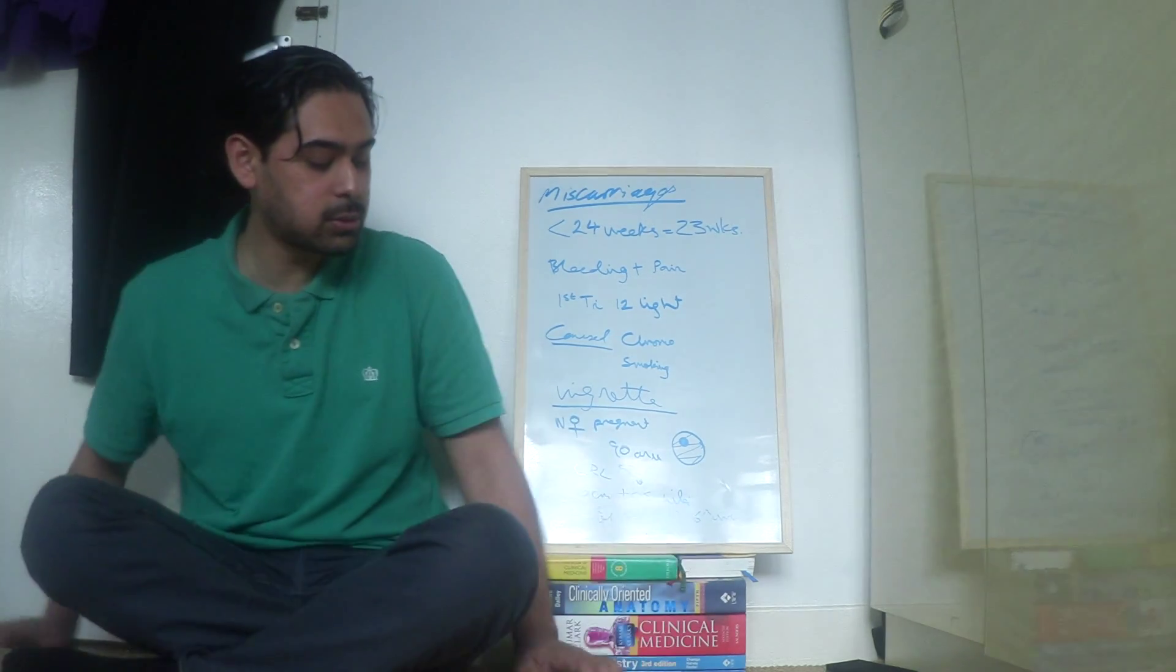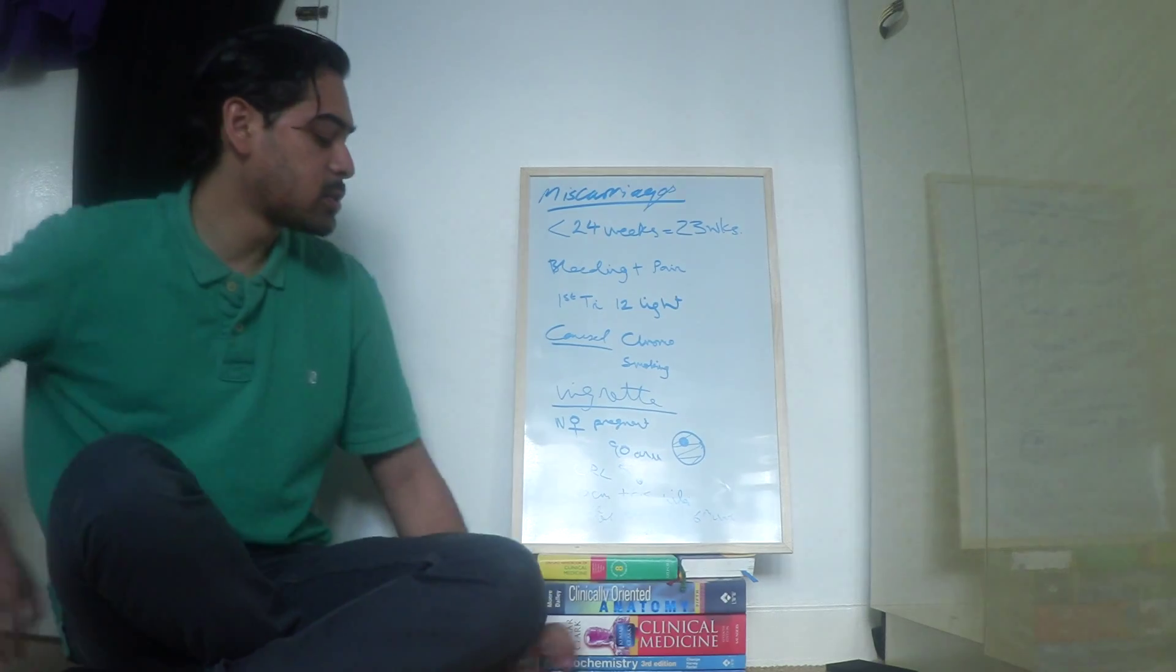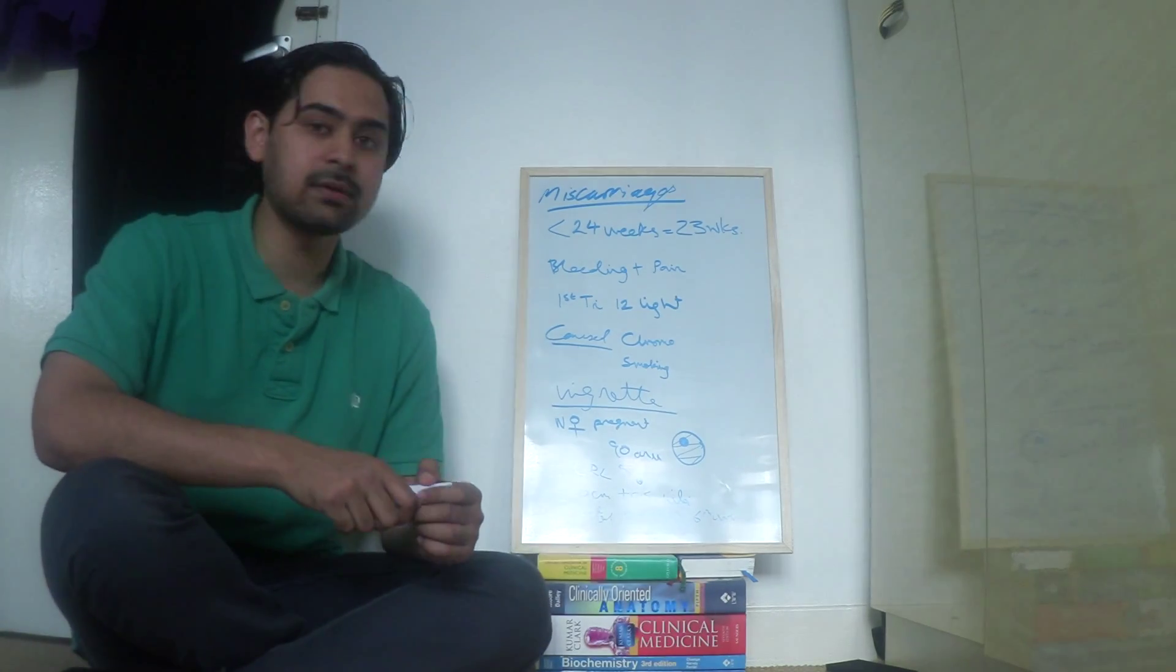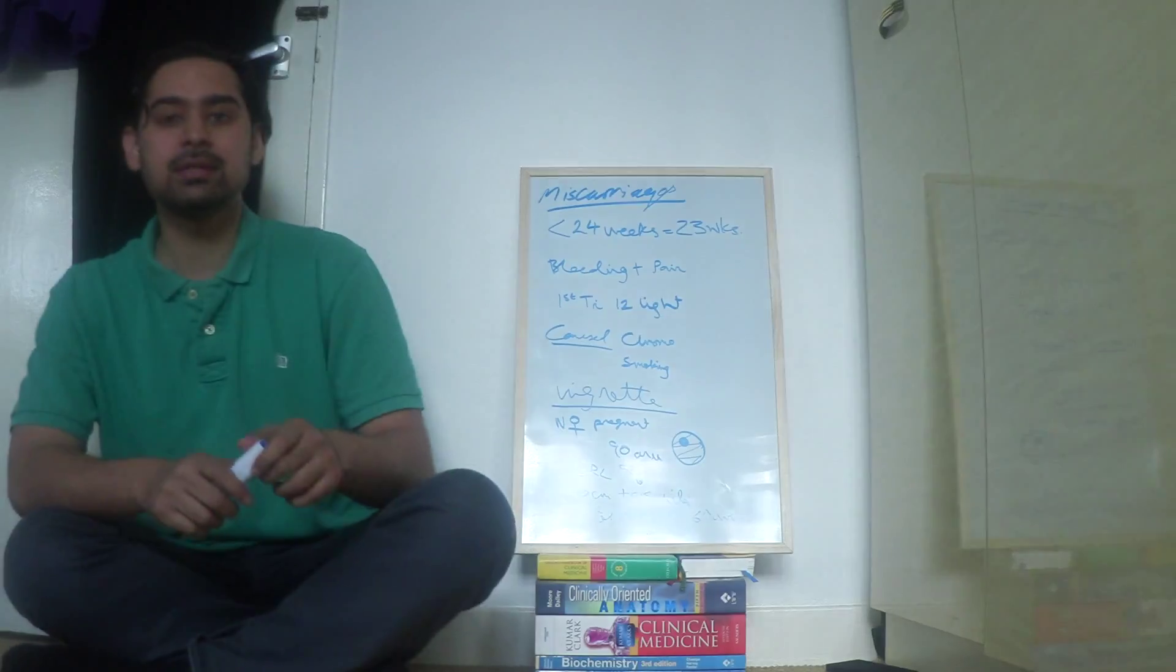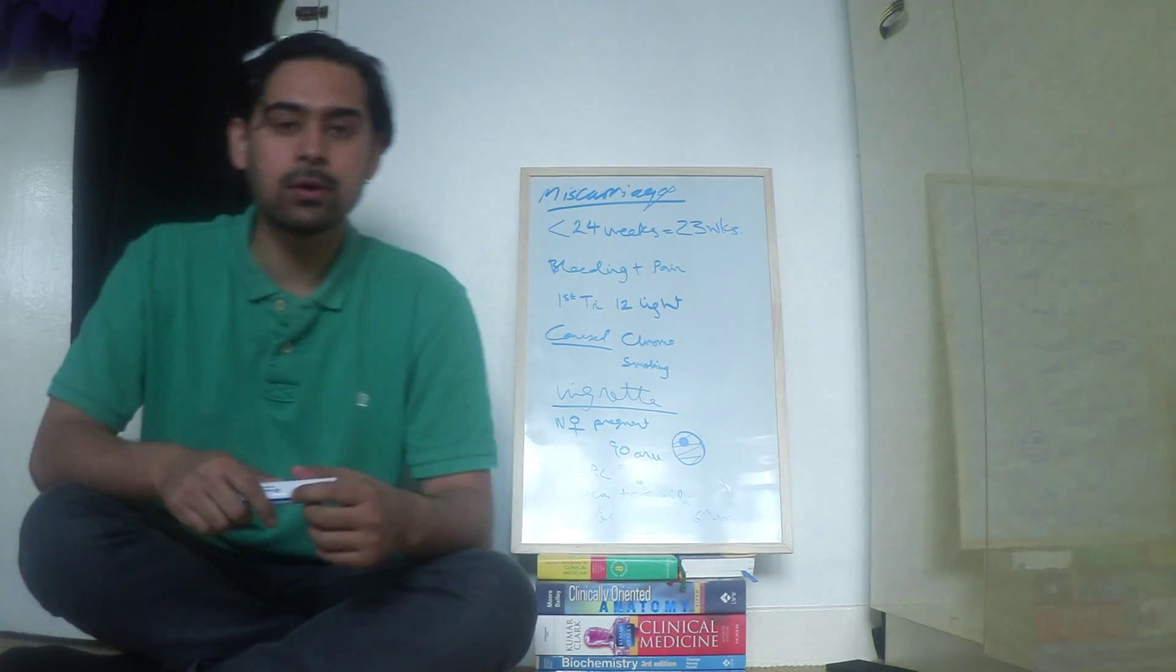Okay, so to begin with today I'm talking about miscarriage terminology. So what's a miscarriage? A miscarriage is any loss of pregnancy, and this is in the UK before 24 weeks.